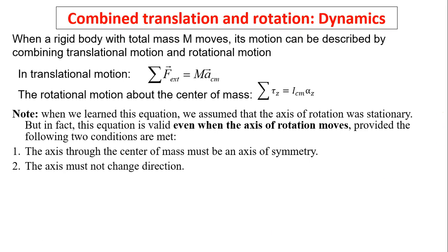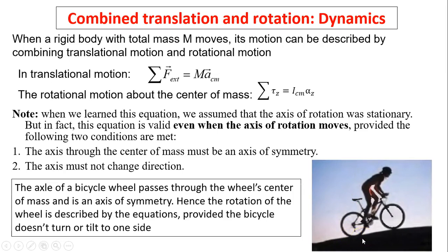Combining translation and rotation in dynamics: a rigid body with total mass m moving through space can be described by combining translational and rotational motion. In translational motion, F equals ma; in rotational motion, torque equals I alpha. This equation is valid even when the axis of rotation moves, provided two conditions: first, the axis through the center of mass must be an axis of symmetry; second, the axis must not change direction. For example, when riding a bicycle, the axis passes through the center of the wheel, which is an axis of symmetry, and the rotation of the wheel is described by these equations.